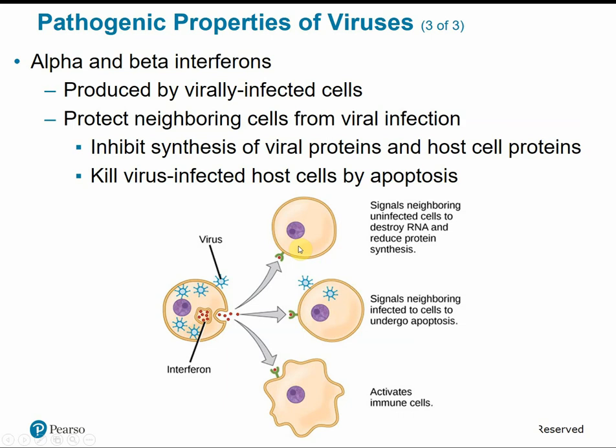Interferons can signal neighboring uninfected cells to destroy RNA and reduce protein synthesis — essentially locking their doors before the virus arrives. They can signal infected cells to undergo apoptosis or cell suicide before the virus has a chance to replicate and spread more. Interferons can also activate other immune cells to help counteract the infection.